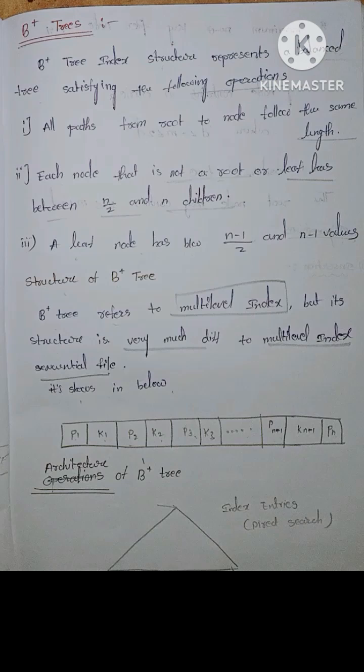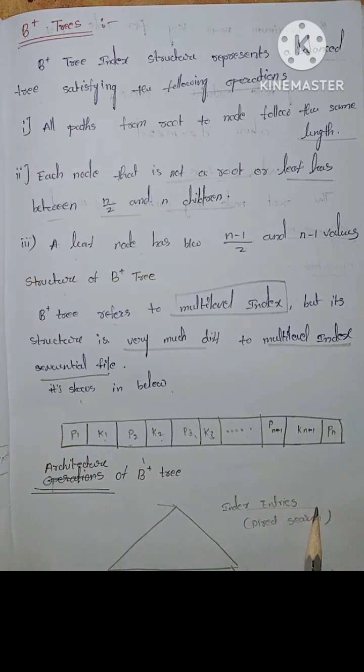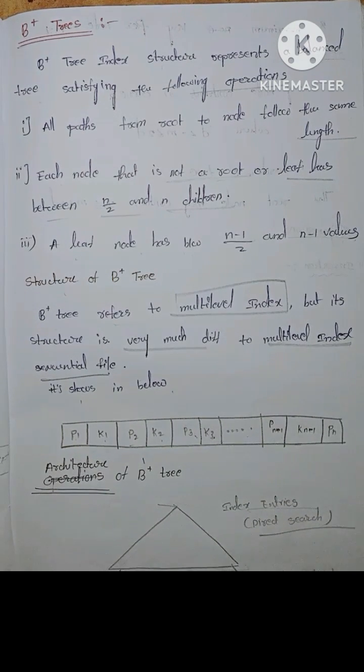Then architecture of B plus tree. This is the index entries, direct search. And this is the data entries, sequence search.